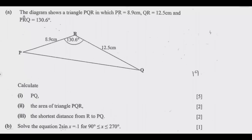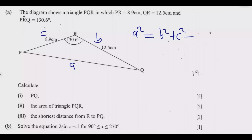For part (i), we find PQ using the cosine rule, because two sides subtending the angle 130.6 degrees are given. The cosine rule states that if we label the sides A, B, and C, then A squared equals B squared plus C squared minus two times B times C times cosine of the angle theta.